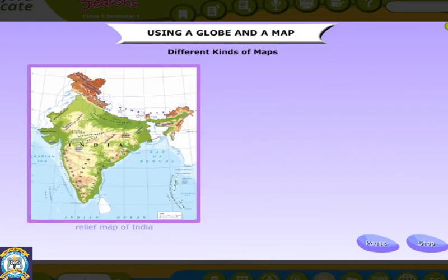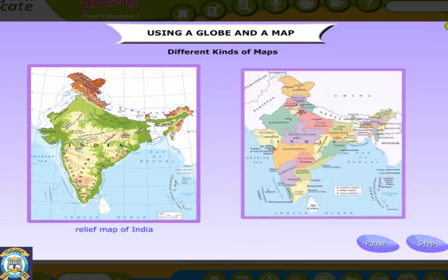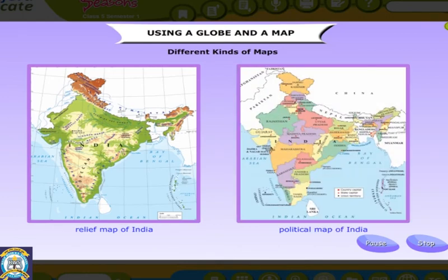Look at the relief and political maps of India. Different kinds of maps show different features. Some may cover one particular theme and hence they are called thematic maps. Some may show the physical features of a region. These are known as relief maps.